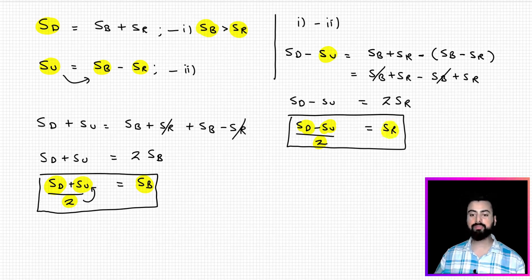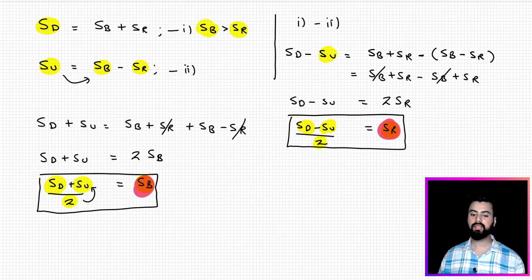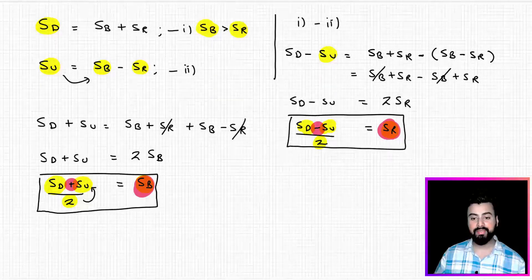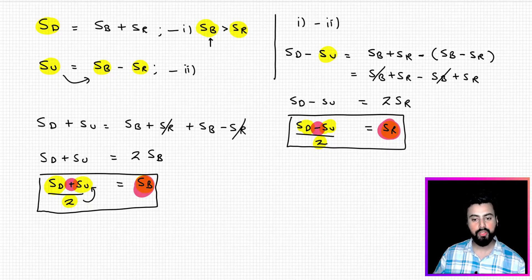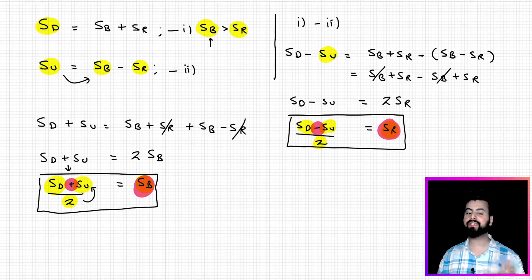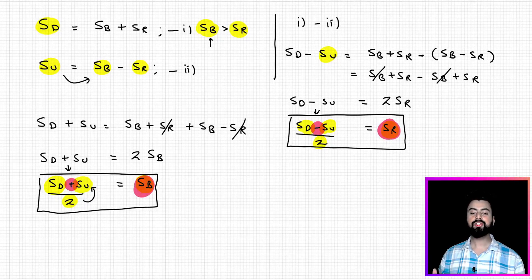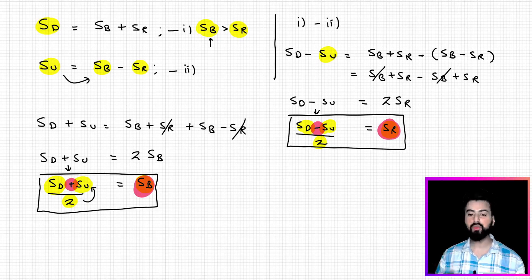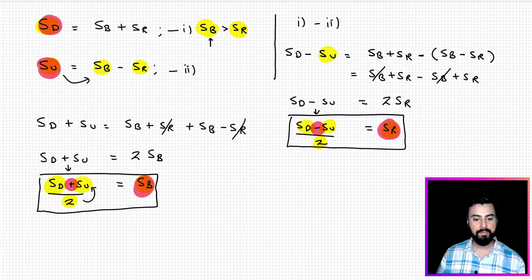There's an easy way to remember these two formulas. Comparing speed of river and speed of boat, the only difference is the sign: for speed of boat we add (downstream + upstream), and for speed of river we subtract (downstream − upstream). So we now have four important formulas: speed downstream, speed upstream, speed of boat, and speed of river.